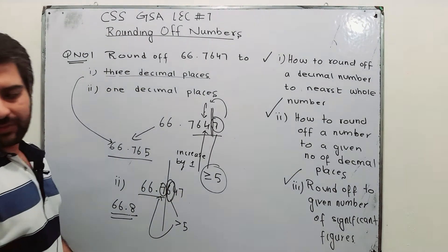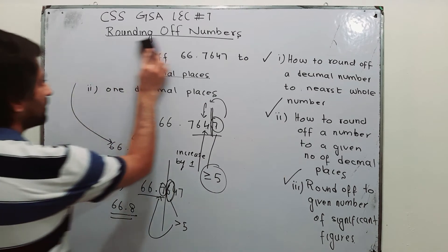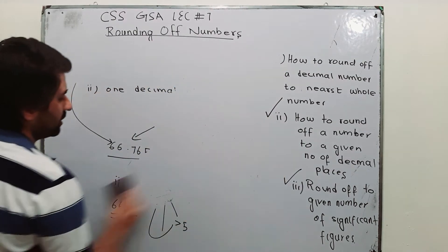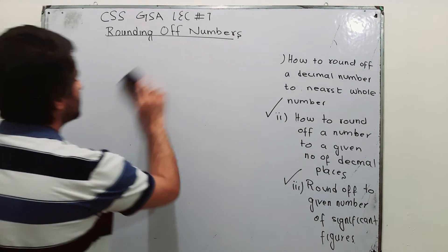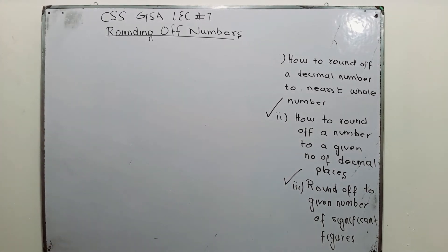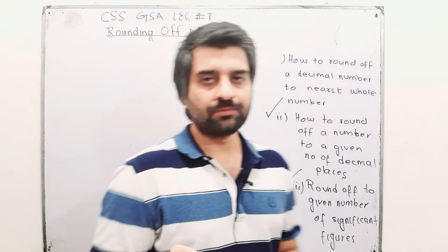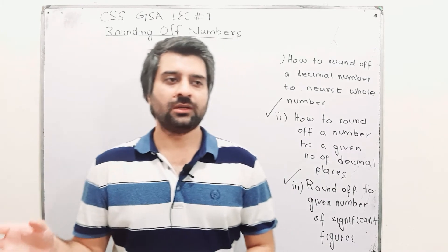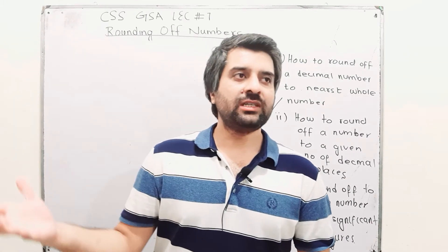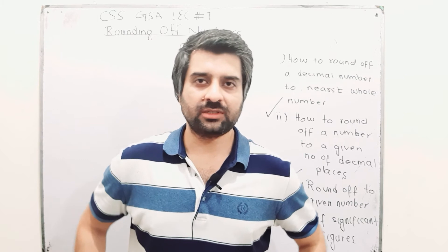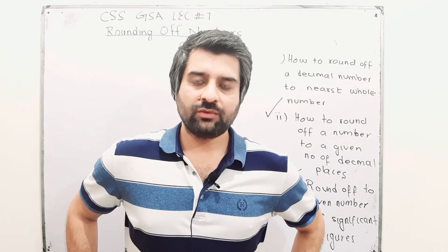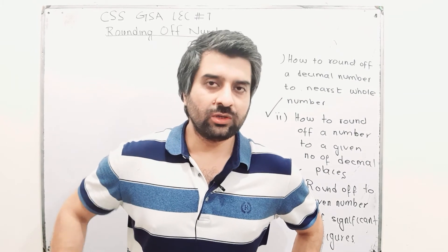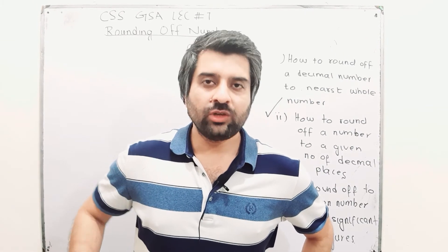Now moving to the concept of significant figures — a very important and easy concept. Significant figures relate to the precision of a measurement, or accurately known digits. How many significant figures are there in a particular number? We have some rules. Rule number 1: all non-zero digits are significant — for example, 1, 2, 4, 9 are all significant.